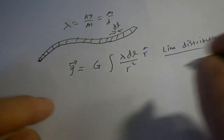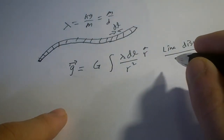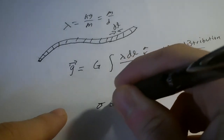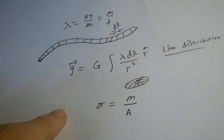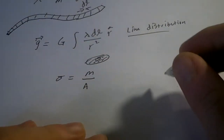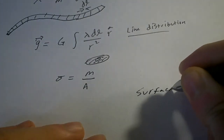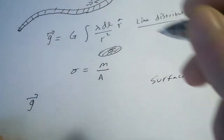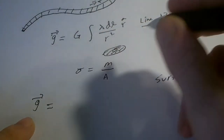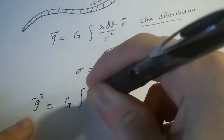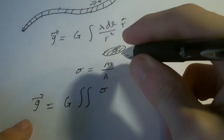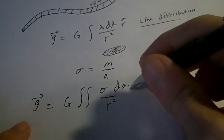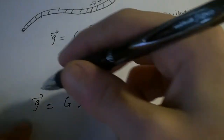If you have a surface mass density, I'll denote that as sigma, with units of mass per area. For a surface distribution, the gravitational field g is capital G times the double integral of sigma over r squared, with respect to the area element, in the radial direction depending on how you set up your coordinate system.